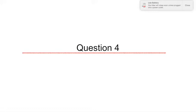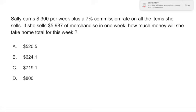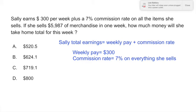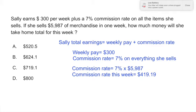Question 4 tells you that Sally earns $300 per week plus a 7% commission rate on all the items she sells. If she sells $5,987 of merchandise this week, how much money will she take home total? Her total earnings are her fixed weekly pay plus her commission. Her weekly pay is $300, and her commission is 7% on everything she sells. This week she sold $5,987 worth of merchandise, multiplied by 7%, which gives $419.19.